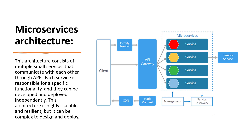Now we are introducing the microservice architecture, which you can say is the best architecture. This architecture consists of multiple small services that communicate with each other through APIs. Each service is responsible for a specific functionality and they can be developed and deployed independently.